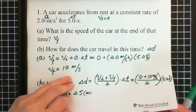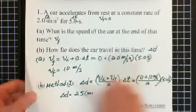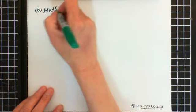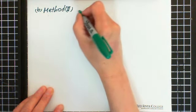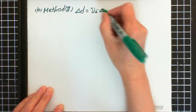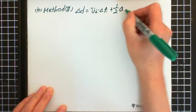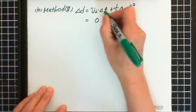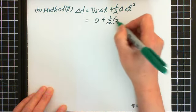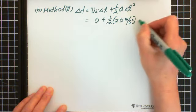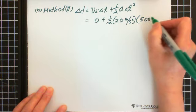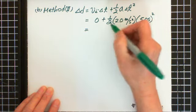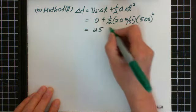The second method: method two uses delta d equals V initial times delta t plus one-half times A times delta t squared. Because initial velocity equals zero, that term drops out, leaving one-half times 2.0 meters per second squared times 5 seconds squared. One-half times 2 cancels out, and 5 squared equals 25 meters.